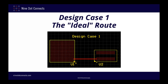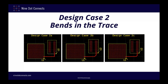Bends cause an impedance mismatch on the trace at the location of the bends, due to the fact that the geometry of the copper changes at the point of the bend. Impedance mismatches cause signals to reflect, which in turn show up as attenuation and noise on the signal. To minimize this noise, we want to minimize impedance mismatches in the trace. There are three types of bends commonly used for PCB layouts: 45 degrees, 90 degrees, and arcs. I've created three designs in which everything but the bend type is the same.